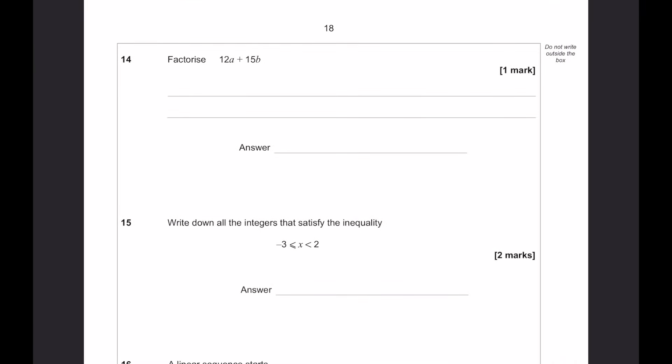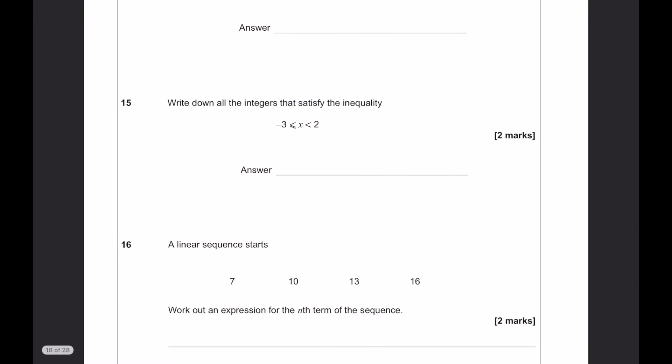Factorize 12a plus 15b. Now, first of all, we can see that 3 can be taken out of both of those. Then we've got 4a plus 5b. Write down all the integers that satisfy. It's including minus 3, so minus 3, minus 2, minus 1, 0, 1, but not 2, because it's strictly less than 2.